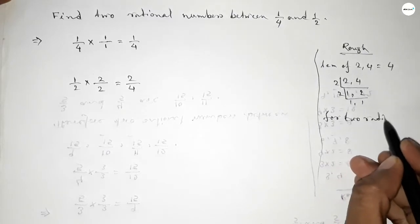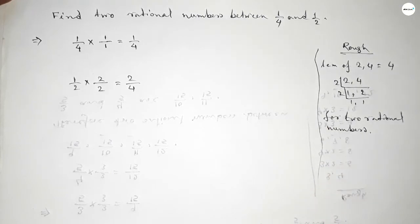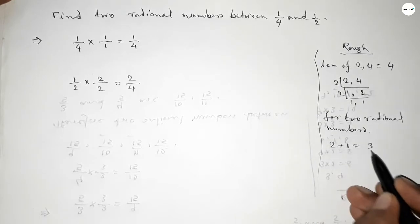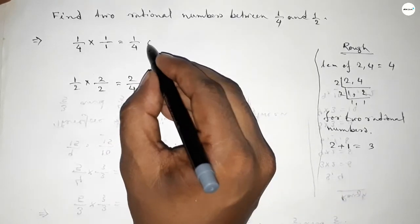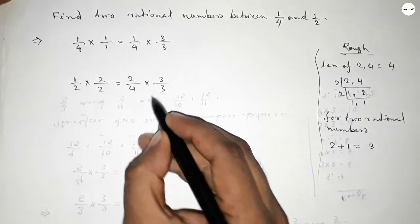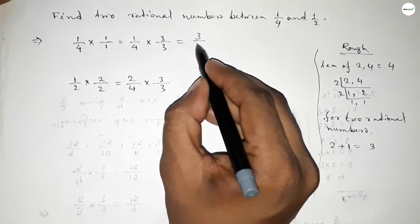Now, finding two rational numbers between any two numbers, we have to follow this method. We should multiply both numbers 1/4 and 2/4 by 2 plus 1 equals 3, up and down by this way. Here also 3/3.